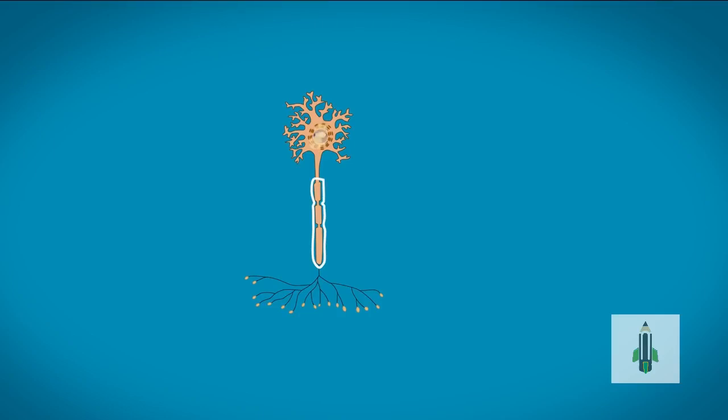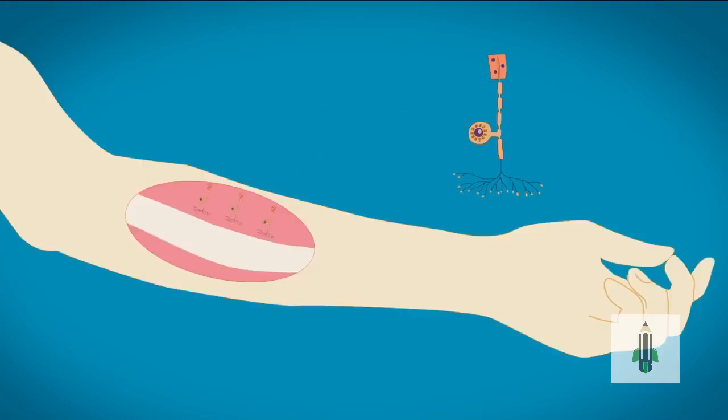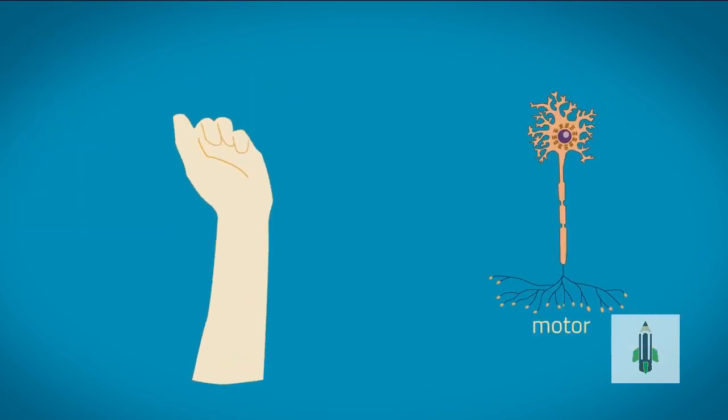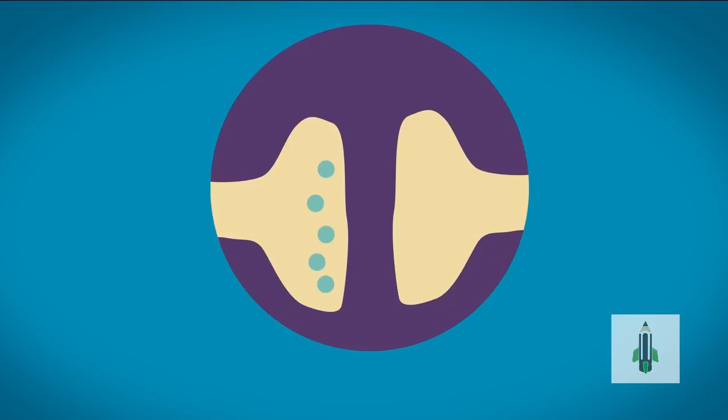Because sensory neurons are the ones that detect the stimulus, they have receptors at the end of their fibers. Because motor neurons trigger the reaction, they have motor end plates which cause muscle fibers to contract or glands to secrete hormones. The relay neurons make connections with other neurons across gaps that are called synapses.